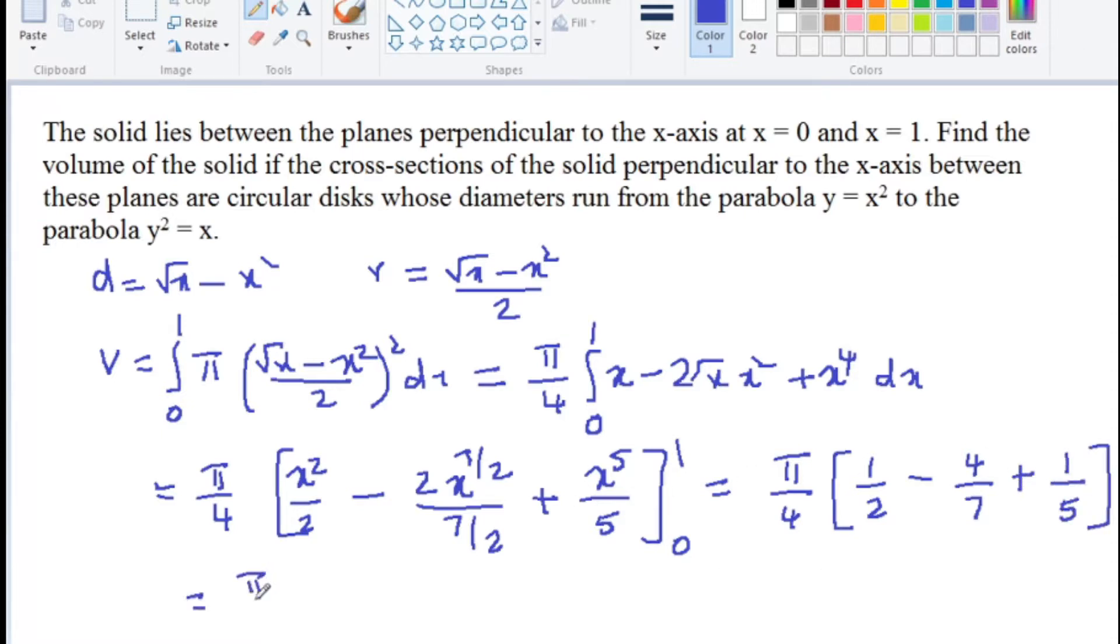Equal to pi by 4 into, with LCM 70, we get 35 minus 40 plus 14 divided by 70, equal to 9 pi by 280.